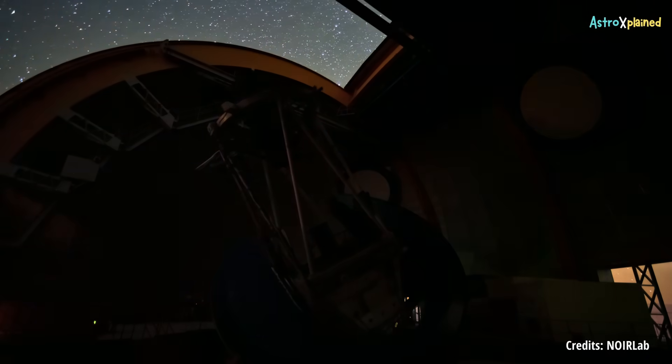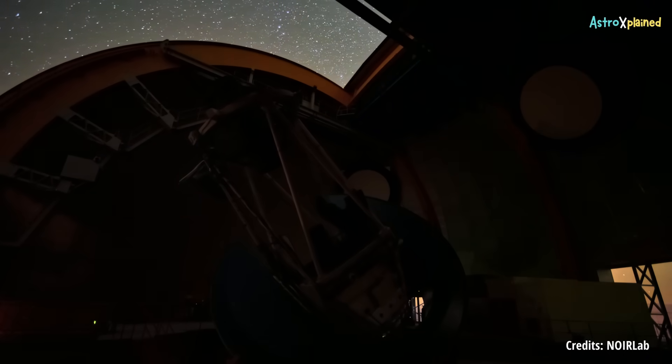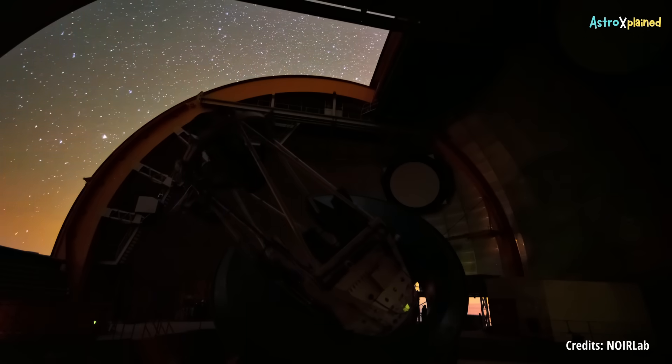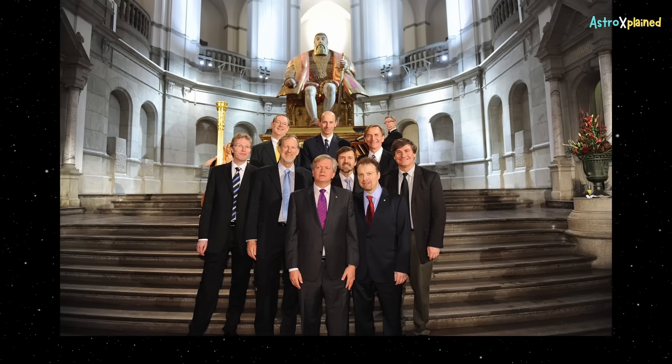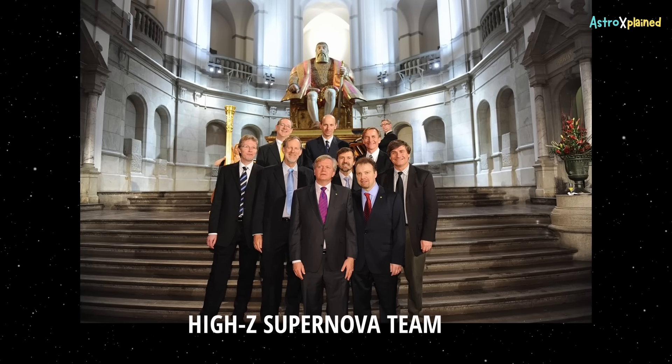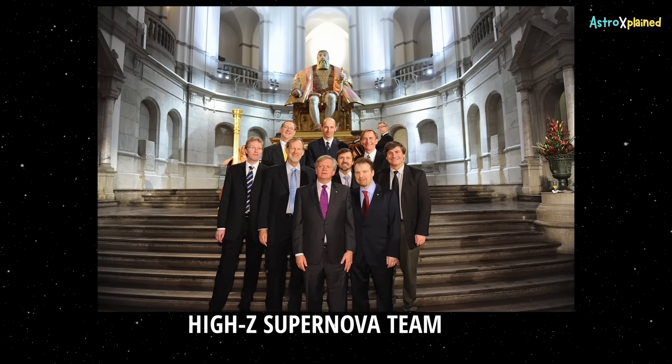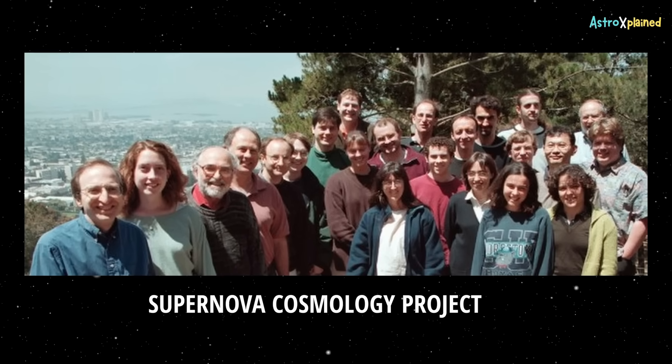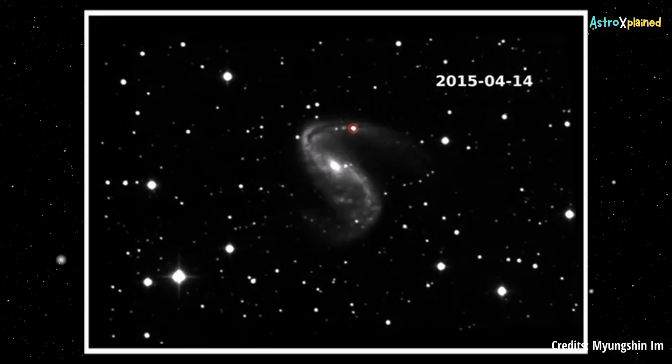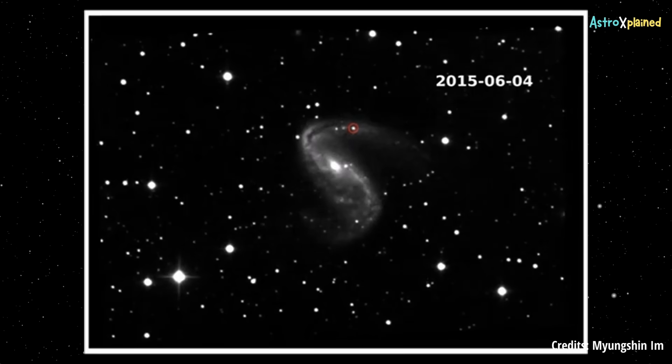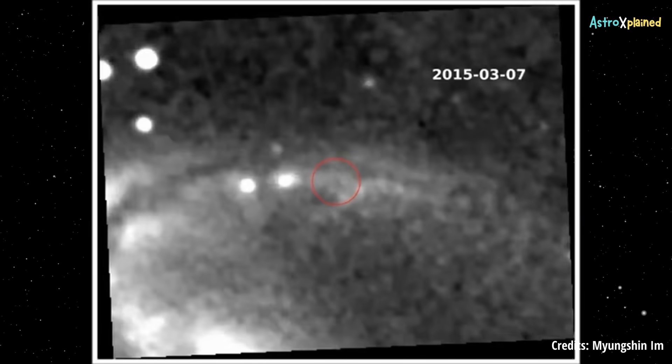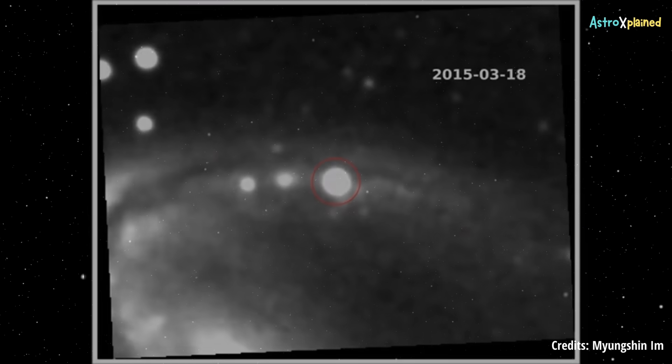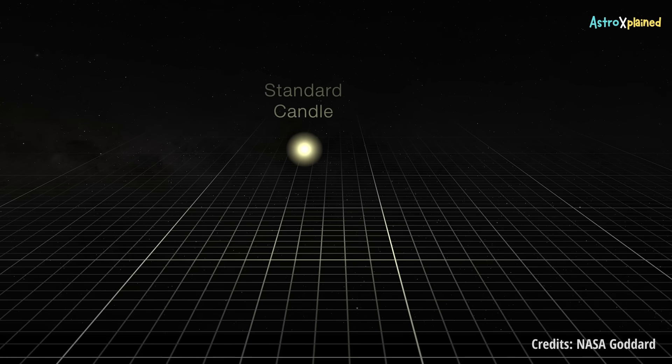However, this picture began to change with the advent of more precise observational techniques in the late 20th century. Research groups, notably the High Redshift Supernova Search Team led by Adam Ries and Brian Schmidt, and the Supernova Cosmology Project led by Saul Perlmutter, undertook systematic surveys of distant Type Ia supernovae. Type Ia supernovae are one of the standard candles of the universe.